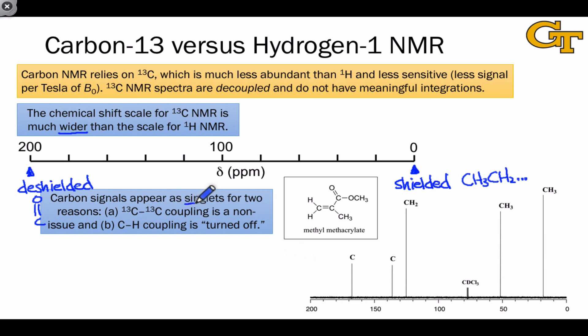In carbon-13 NMR spectra, carbon signals appear as singlets, and we just emphasize the reasons why. Carbon-13-carbon-13 coupling is a non-issue, and CH coupling is turned off through broad irradiation of all of the protons with their resonant frequencies. And so, we only see singlets in a carbon NMR spectrum.